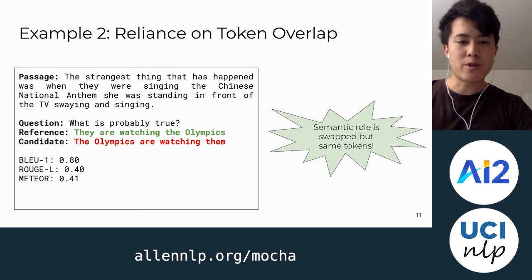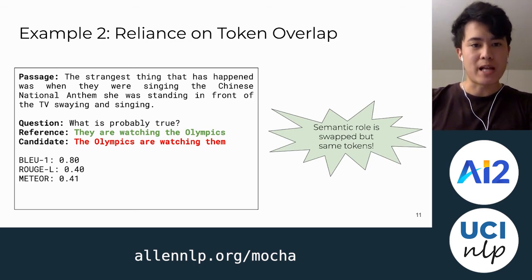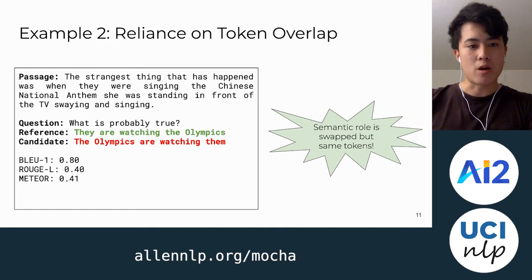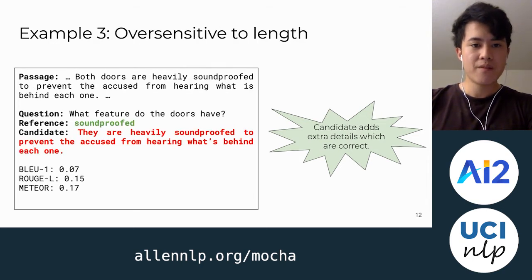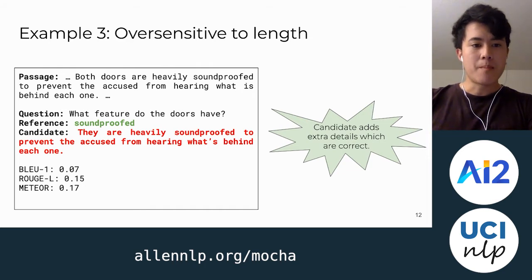In the second example, we show that existing metrics have an over-reliance on token overlap. The reference is 'they are watching the Olympics,' and the candidate is 'the Olympics are watching them.' The semantic role is swapped in the candidate, but the tokens are very similar between the reference and the candidate, so a metric like BLEU assigns a score that's a little too high. Finally, existing metrics are insensitive to length. The candidate is a much longer way of saying the reference and adds some extra correct details, but BLEU, ROUGE, and Meteor think the candidate is too long and assign a score that's too low.